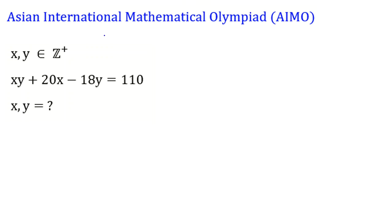We are going to solve this problem from AIMO, Asian International Mathematical Olympiad. x and y are positive integers. xy plus 20x minus 18y equals 110. Find x and y.